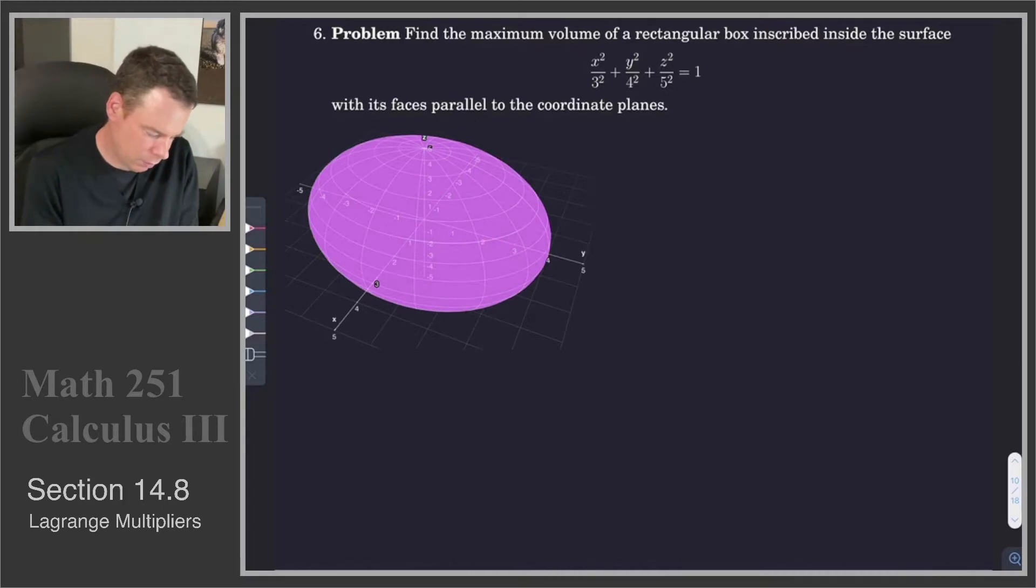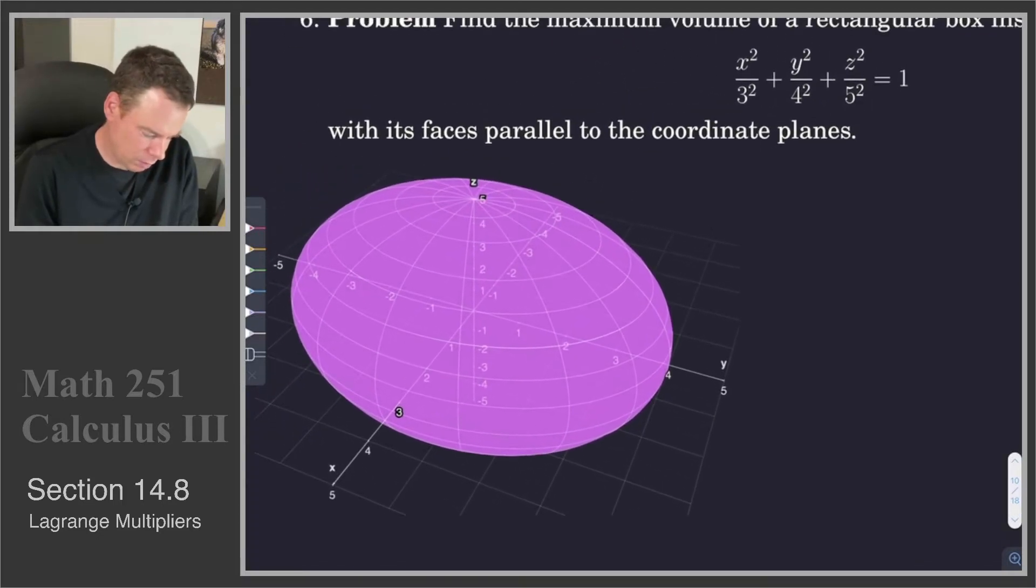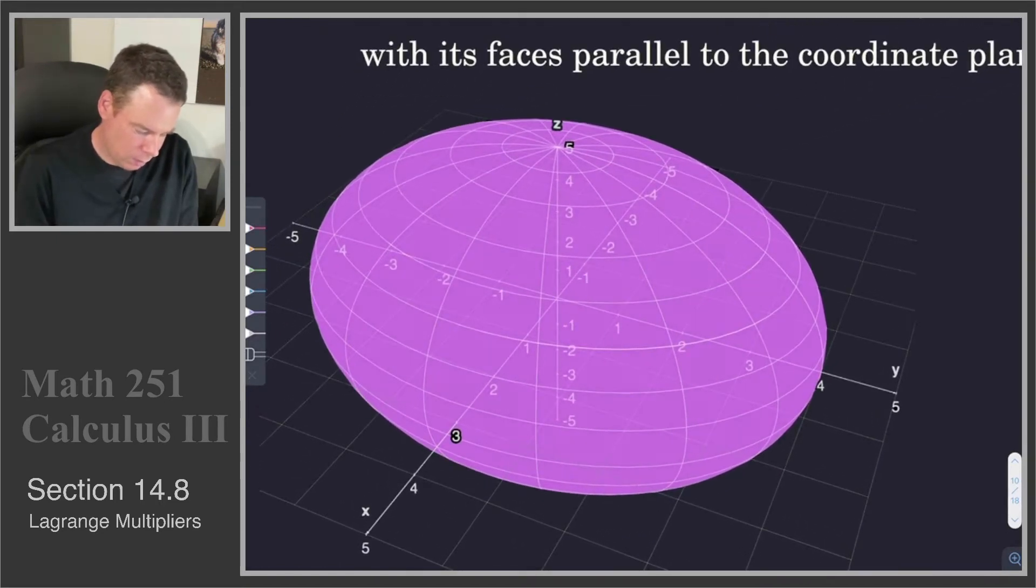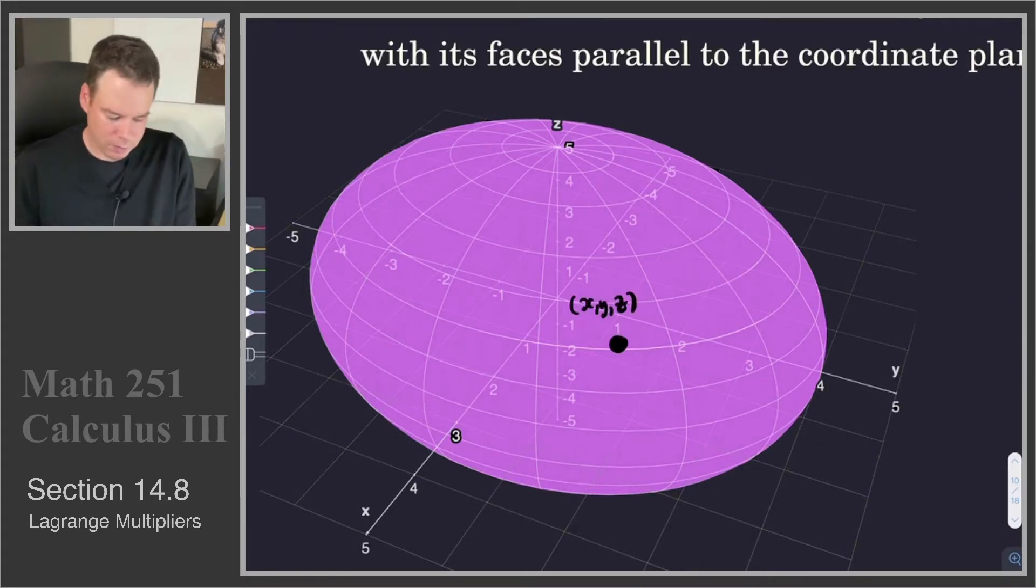So let's get a feel for what this looks like. Here's our ellipsoid. What I'm interested in is sticking a box inside here. Let's just start with a vertex that's going to be right on the surface. Then from that vertex, let's say that's vertex (x, y, z) where x, y, z are all positive, so we're out here in the first octant.